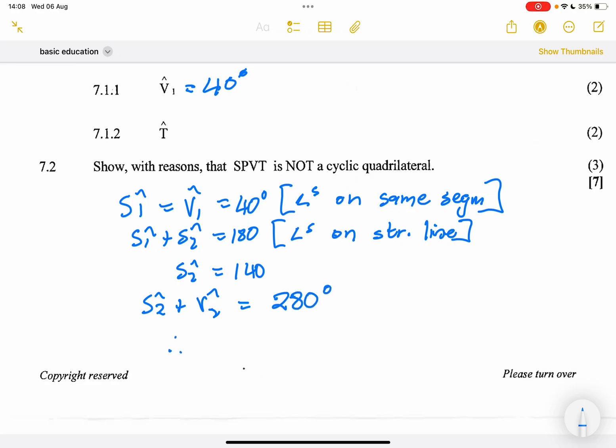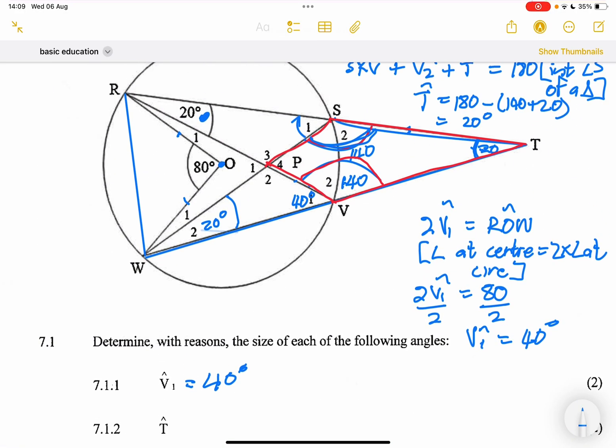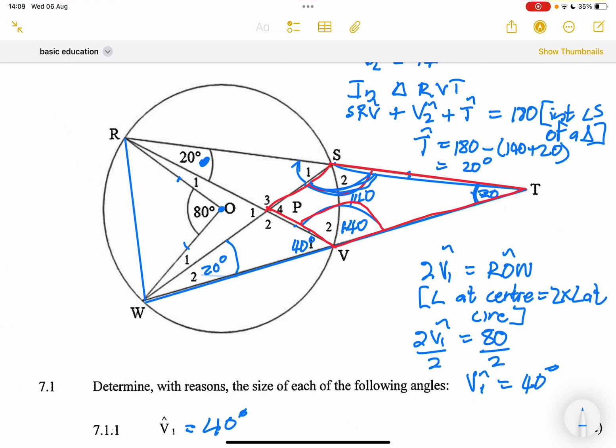S2 plus V2 is equal to 280 degrees. Therefore, SPVT is not a cyclic quad because the sum of opposite angles is not supplementary. I hope that you get how I answered this question.